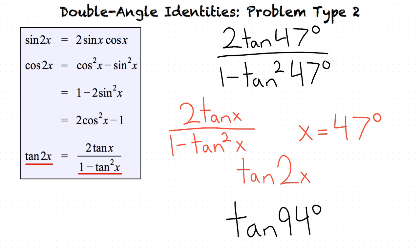I think I'm starting to understand, but let me summarize just to make sure. First, we need to identify the form that our problem is in so that we can find the corresponding double angle formula. Once we've found the double angle formula, we then insert the x value from our problem into our double angle formula, which results in our final answer. Great job! It seems that you have an understanding of how to identify and solve double angle identities.